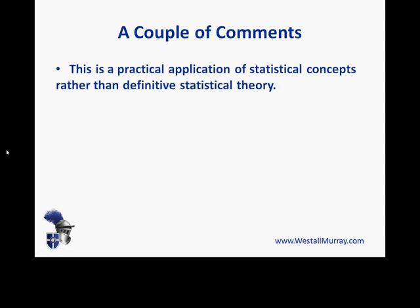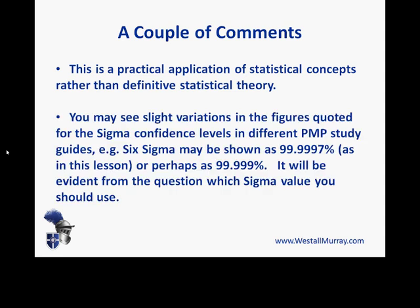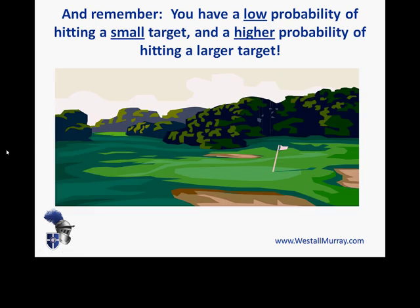A couple of quick comments. First, remember this is a practical application of statistics rather than deep statistical theory. If you've studied statistics in depth you might think it's an oversimplification — but fortunately, all you need for the PMP exam is that oversimplification. Second, in various books you might see those confidence levels noted with slightly different numbers. For example, six sigma is sometimes shown as 99.9997% and sometimes abbreviated as 99.999%. Nevertheless, in the question it will be very obvious whether to use one, two, or three sigma. Remember: low probability of hitting a small target, higher probability of hitting larger targets.